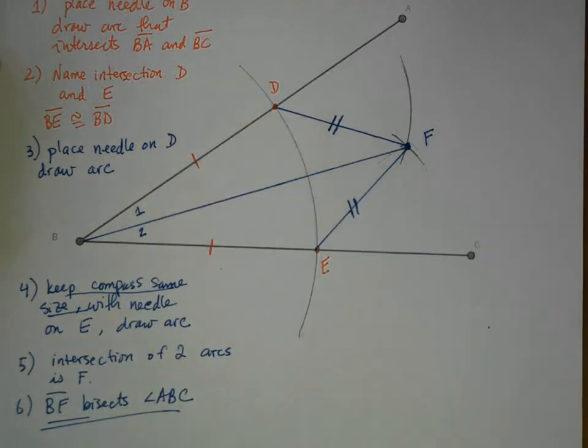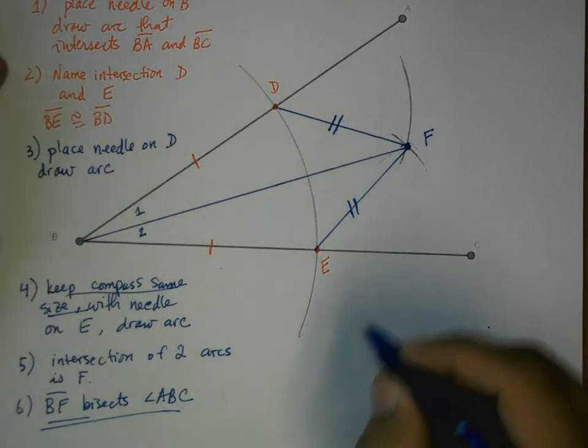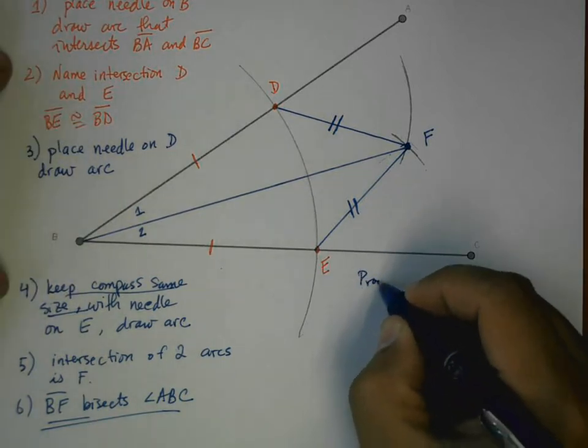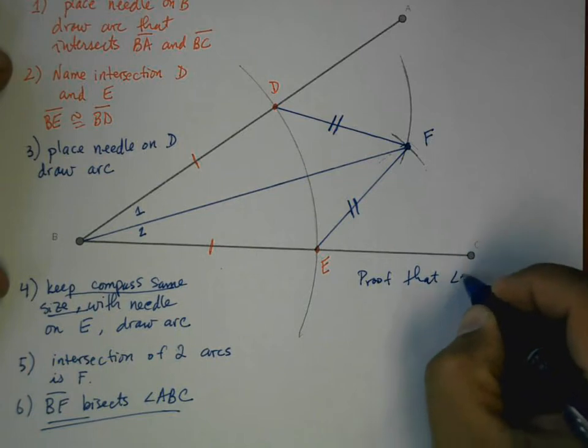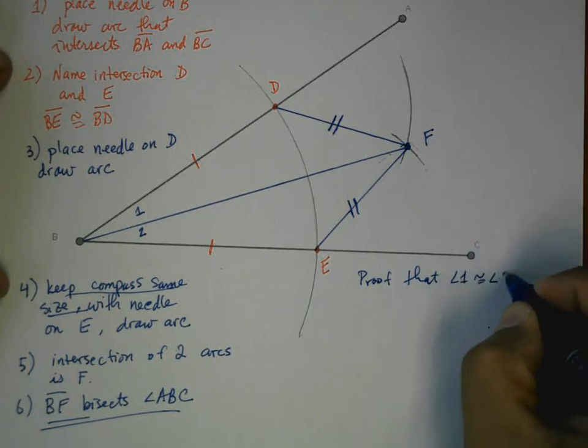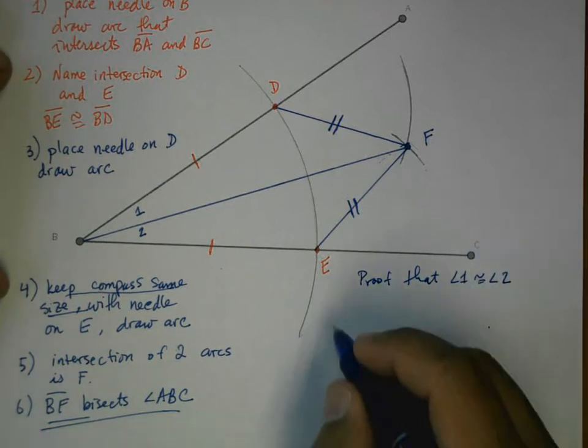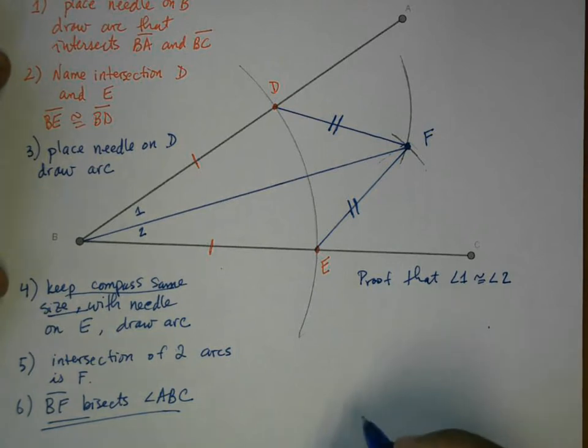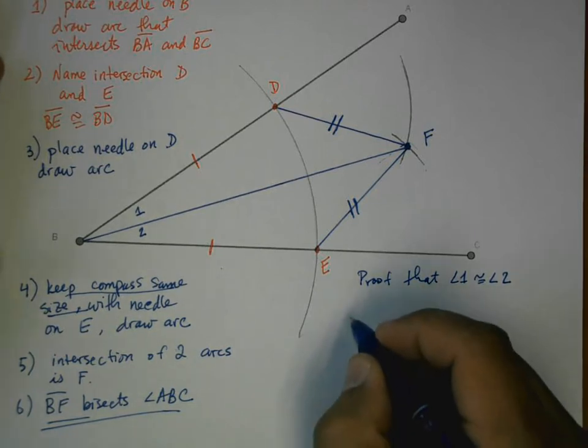So now I'm going to name this angle one and angle two. And what we really need to show is that angle one and two are congruent. So proof that angle one is congruent to angle two. And it's not too difficult to do. We can do it in about four different steps.